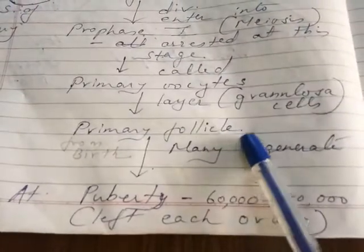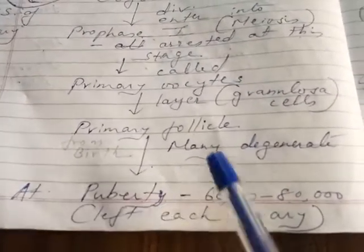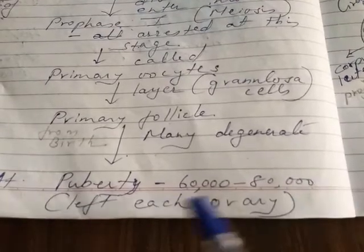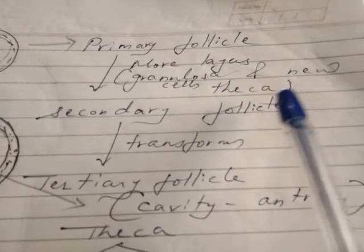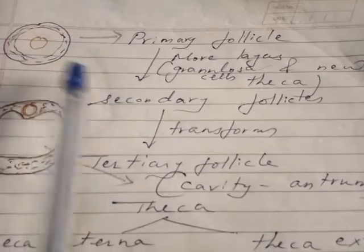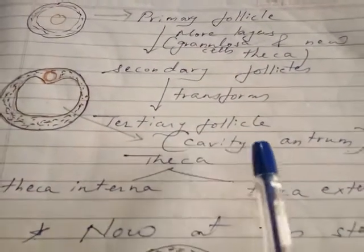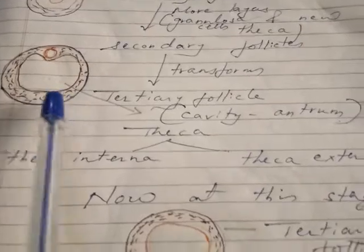Many primary follicles degenerate from birth until puberty. During puberty, only 60,000 to 80,000 primary follicles remain in each ovary. Around the primary follicle, more layers of granulosa cells are formed and a new theca is formed, converting it into a secondary follicle. The secondary follicle then transforms into a tertiary follicle, in which a cavity called the antrum is formed. The two theca layers are called theca interna and theca externa.